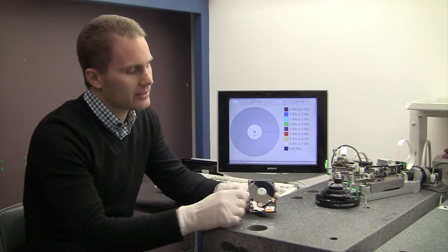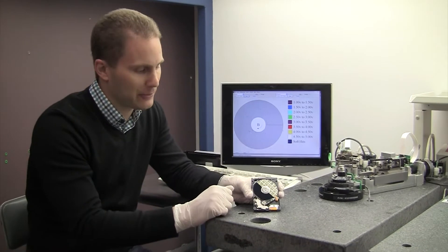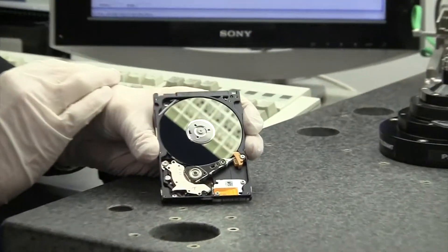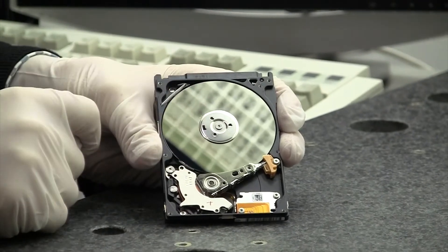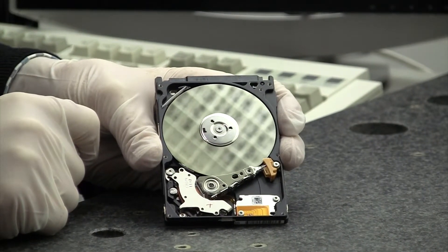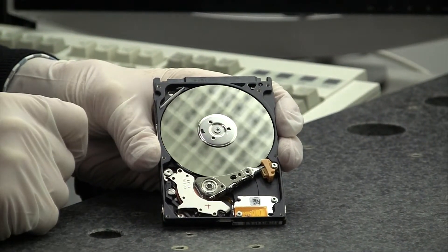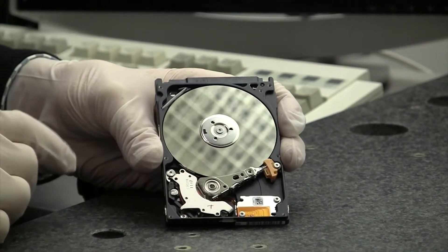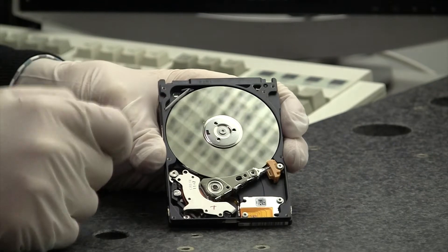This is actually the inside of a hard drive. Some folks might not be familiar with what it looks like inside a drive. And the basic components are pretty simple. Right here is what we call the hard drive platter. This is where the data is actually stored. These are the read-write heads, and they kind of move like the arm on a record player as this platter spins.